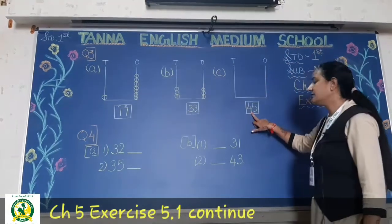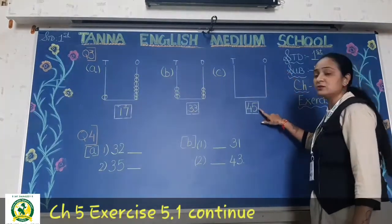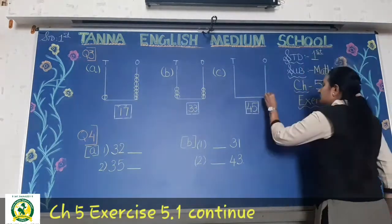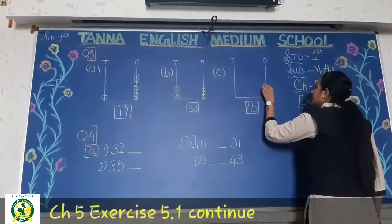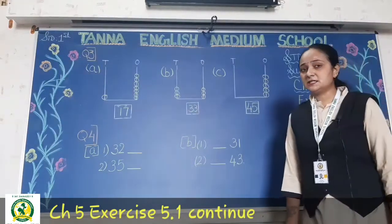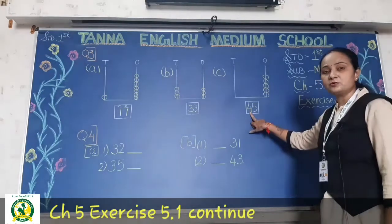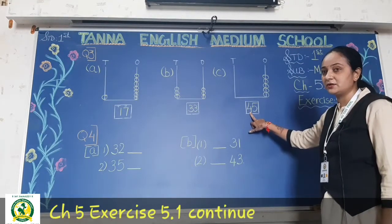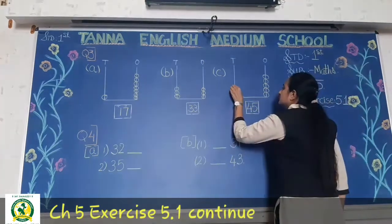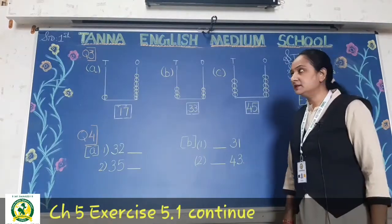Now what is written over here? 45. So at the ones place, how many beads will you draw? Yes, 5 beads. So you have to draw 1, 2, 3, 4, 5 — draw them neatly, okay students, don't make it dirty. Now 4 beads — where will you draw 4 beads? Yes, at the tens place: 1, 2, 3, 4. Done.